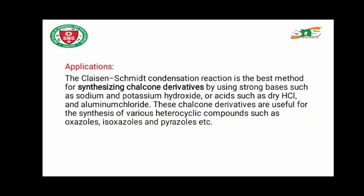The next topic is the applications of Claisen-Schmidt condensation. This condensation is the best method for synthesizing chalcone and its derivatives using strong bases such as sodium or potassium hydroxide, or acids such as dry hydrochloric acid and aluminium chloride. These chalcone derivatives are useful for synthesizing various heterocyclic compounds such as oxazoles, isoxazoles, and pyrazoles.